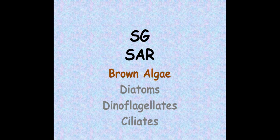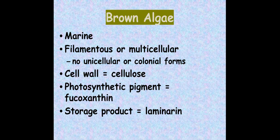Moving forward, let's look at the supergroup SAR — which stands for stramenopiles, alveolates, and rhizarians. We'll look at brown algae, diatoms, dinoflagellates, and ciliates. Brown algae is marine, filamentous or multicellular — there are no known unicellular or colonial brown algae. Their cell walls are made of cellulose, they contain a special pigment called fucoxanthin, and they store their sugar as laminarin rather than starch.